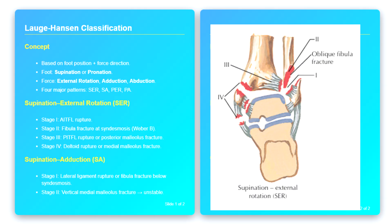In stage two, the force propagates to the lateral malleolus, producing a low transverse or oblique fracture of the fibula at the level of the syndesmosis. This is sometimes referred to as a Weber B fracture, located at the level of the plafond.